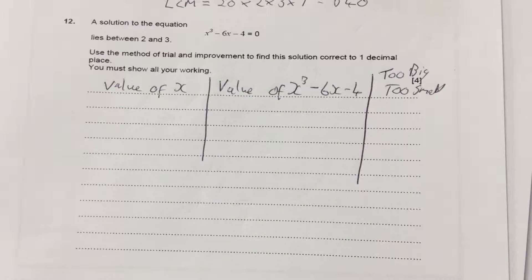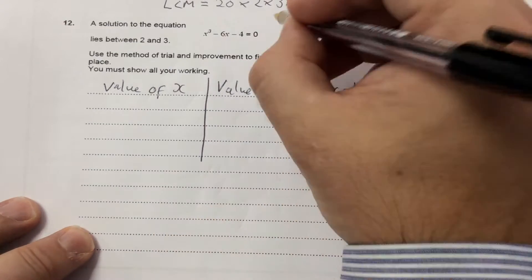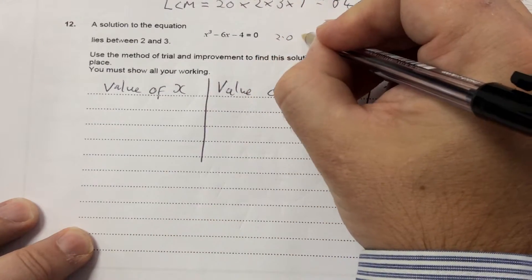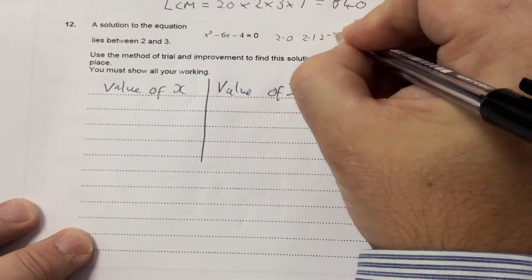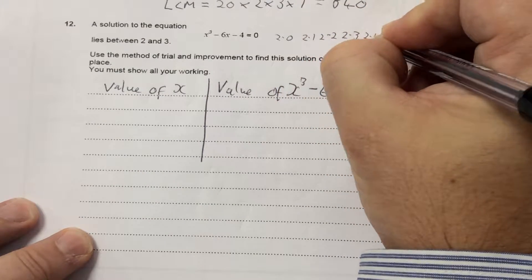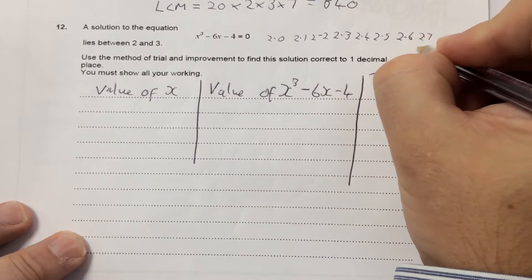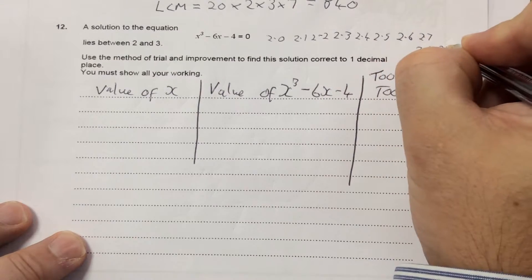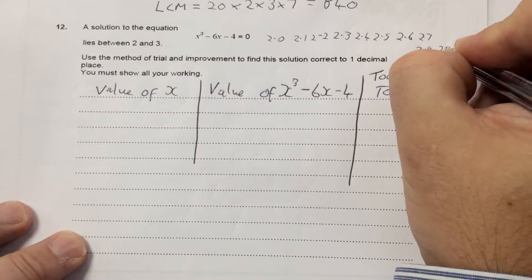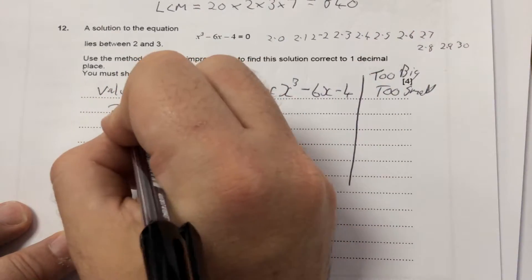A solution to the equation x³ - 6x - 4 = 0 lies between 2 and 3. So what that means is my answer is either going to be 2.0, 2.1, 2.2, 2.3, 2.4, 2.5, 2.6, 2.7, 2.8, 2.9, or 3.0. So I'm going to start with 2.5.